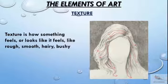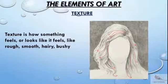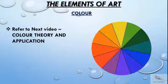Texture: texture is how something feels or looks like it feels—rough, smooth, hairy, bushy. Texture can be made using texture mediums such as gels and paste. Color: color is a bit complex to understand and exploit, but once the basics are clear, it is extremely interesting. This part will be covered in detail in the next video, Color Theory and Application.